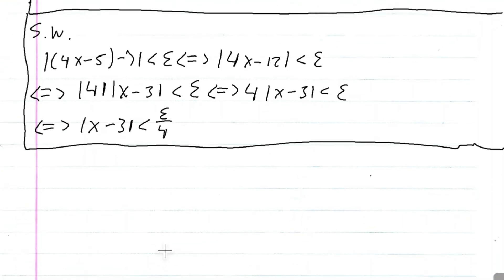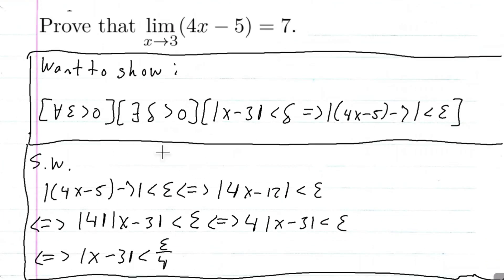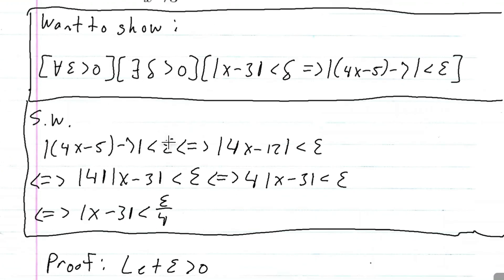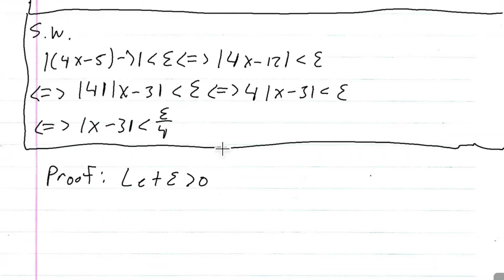So now I can actually start the proof. Proof using the epsilon-delta argument. We're going to let epsilon be greater than 0 — so any epsilon. That's part of what we need: for every epsilon greater than 0. There exists a delta greater than 0, so we're going to list what delta we chose. We choose delta to be equal to epsilon over 4.